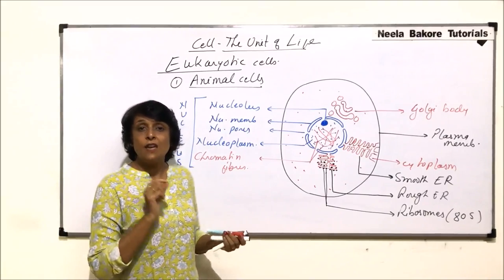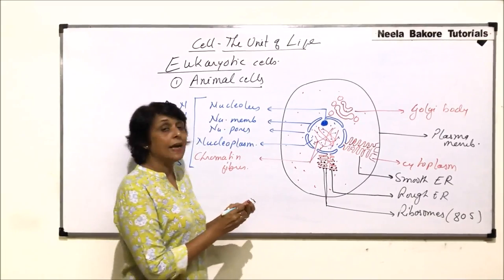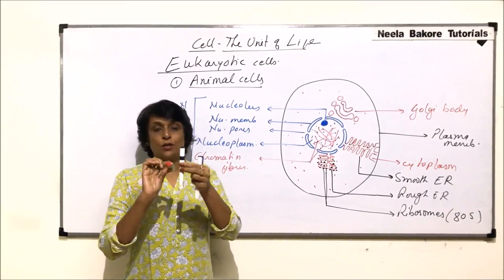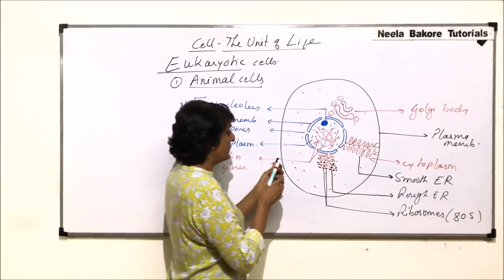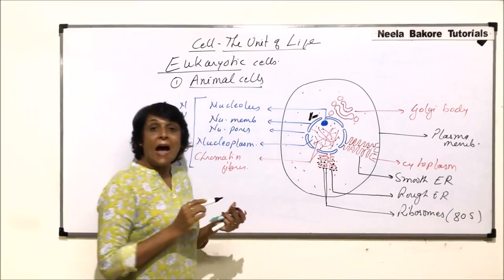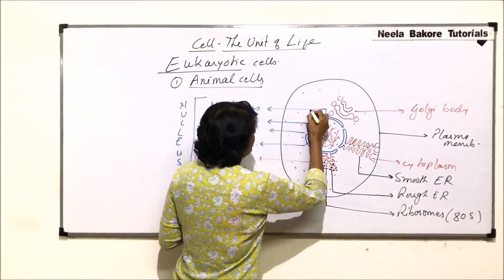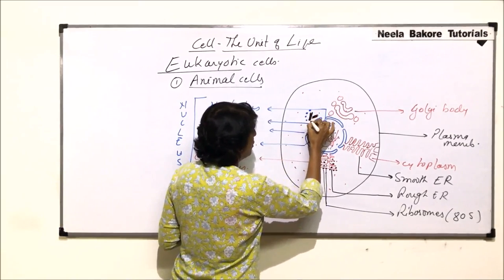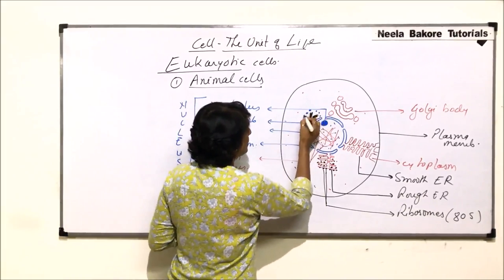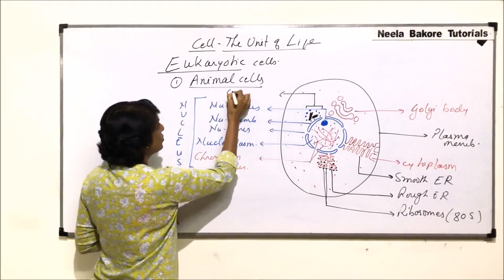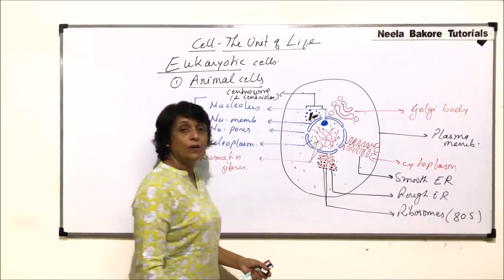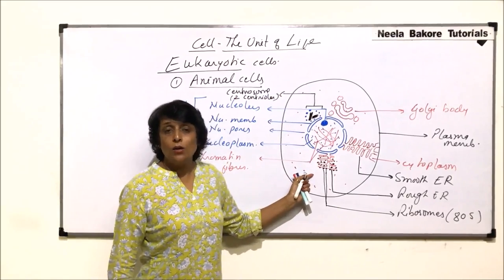In animal cells there is one very peculiar structure found only in these cells and not in plant cells — that is the centriole. Centrioles are two rod-like structures at right angles to each other; if one is vertical, the other is horizontal. They are close to the nucleus. Around these two structures there are nine pericentriolar fibers. This entire structure is known as the centrosome. The centrosome has two centrioles — these rod-like structures are the two centrioles.